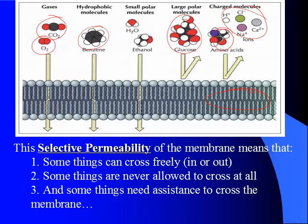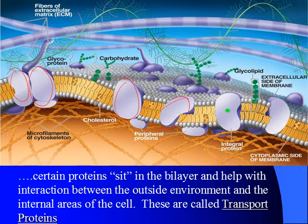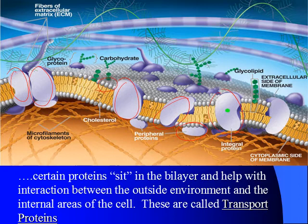Some things can cross in or out freely, like the gases. Some things are never allowed to cross, and you wouldn't want them to, like viruses or certain types of bacteria. And some things actually need to be inside, so they have to get help to cross the cell membrane. Back to this picture, you can see there are these little blobs — most of these are proteins. A lot of these proteins sit in the bilayer. Some sit completely across, some sit just at the edge of one side or the other. A lot of times, the ones that sit completely across will actually help bigger molecules cross into and out of the cell membrane. These are called transport proteins.